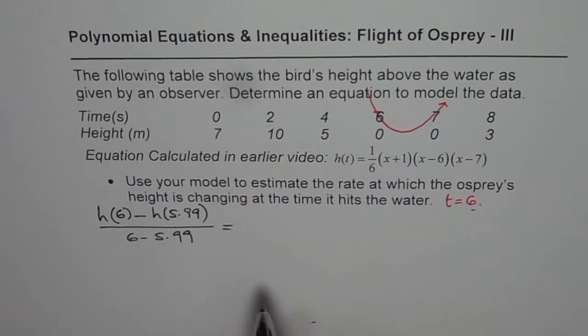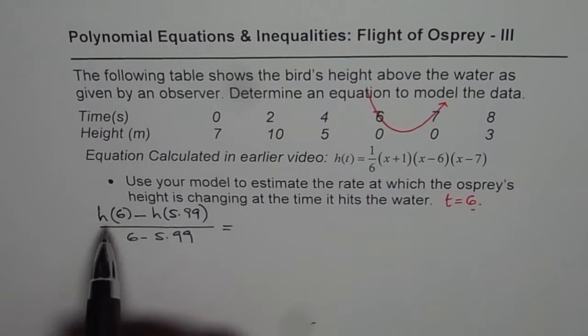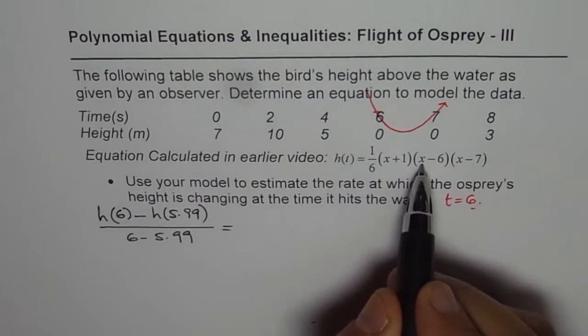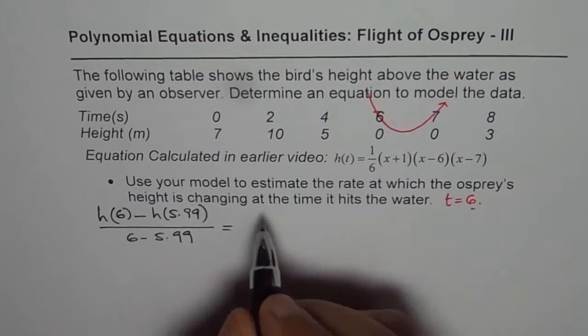So that should give us the rate of change of height at the time when it hits the water, correct? That is what we need to calculate. So what we will do is, we know h(6) is 0, right? Because if I put 6 here, this factor is 0.